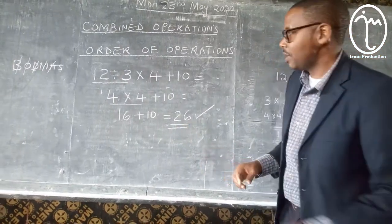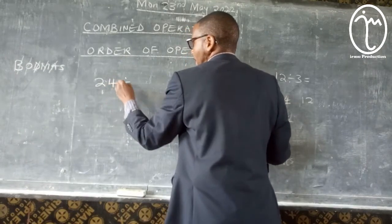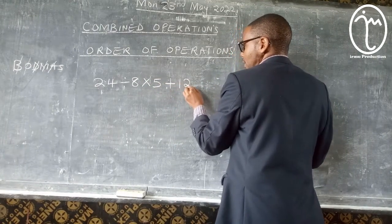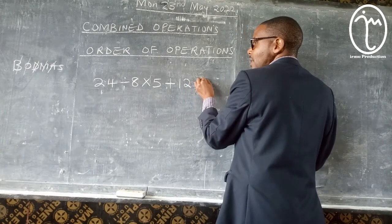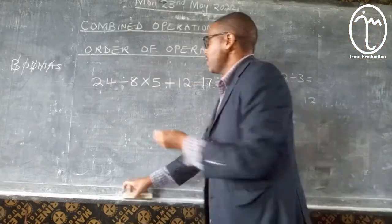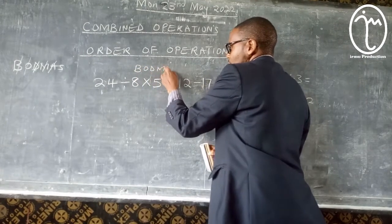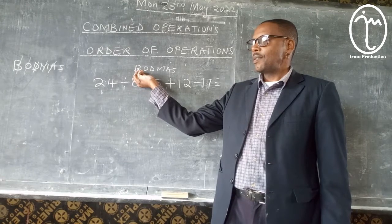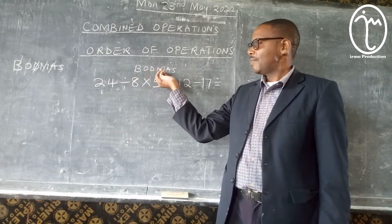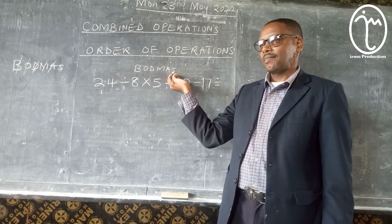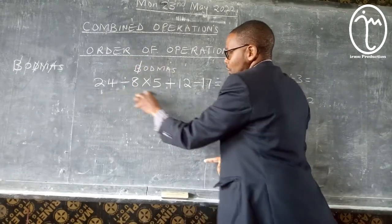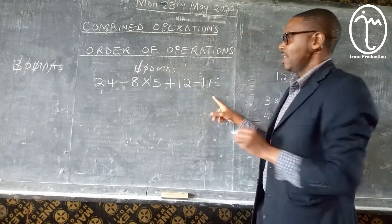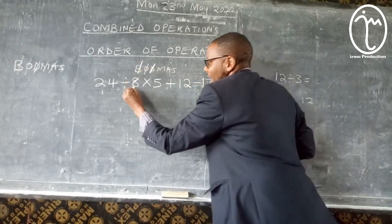You had a question like this in the exam. Somebody read it for us: 7 times 5 plus 10 minus 17. So again, when we are doing such a question, it gives us BODMAS above the question so that you can know what order we are doing. Brackets, Of, Division, Multiplication, Addition, Subtraction. Now you start checking — is there brackets in the question? If it is not there, we just cancel like that. Then you move to Of — there is no Of.